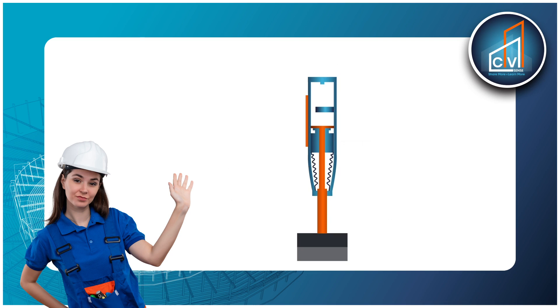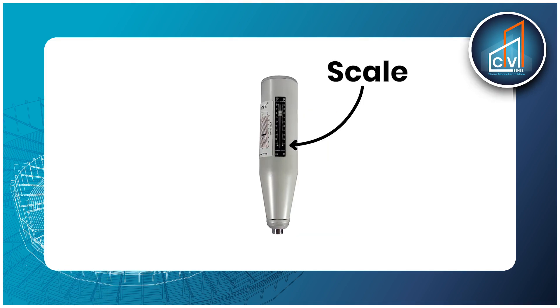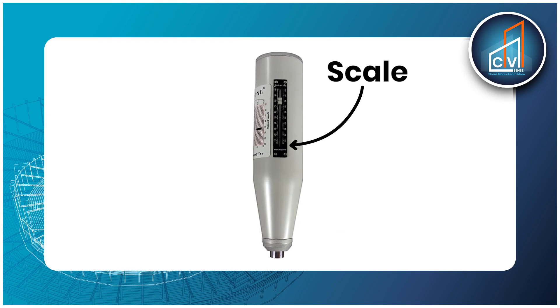How does it work? When the hammer is pressed against a surface, the plunger is released and strikes the surface. The rebound distance is measured and converted into a rebound number, which correlates to the material's hardness.